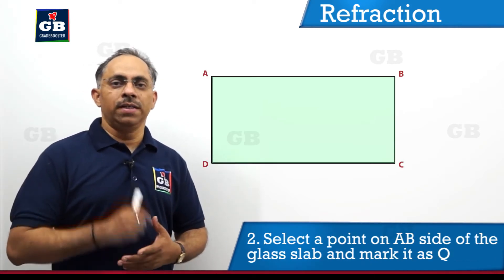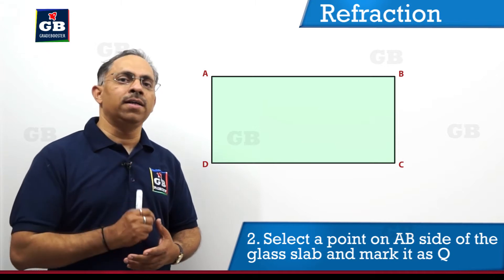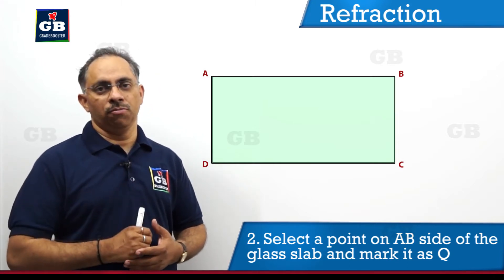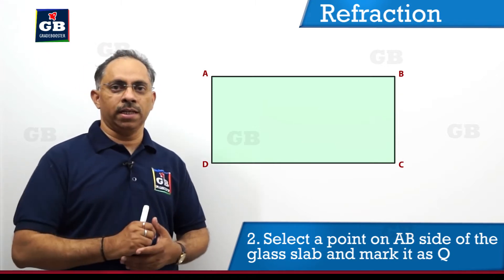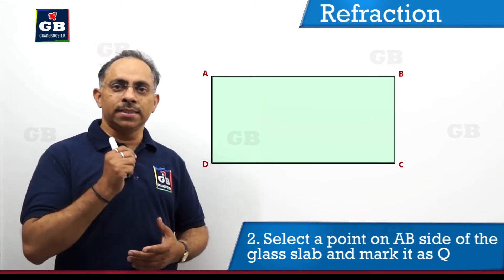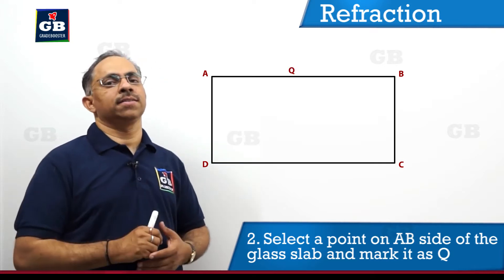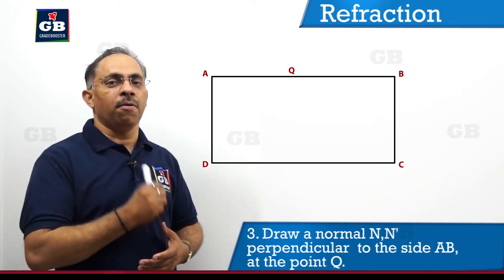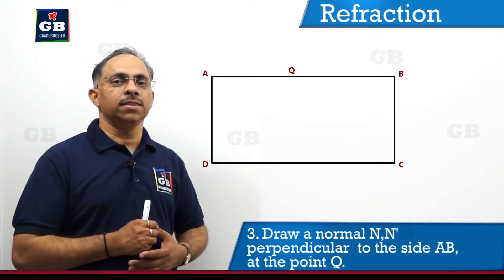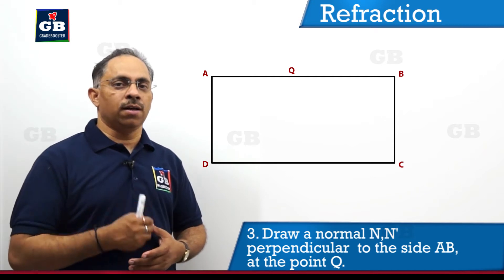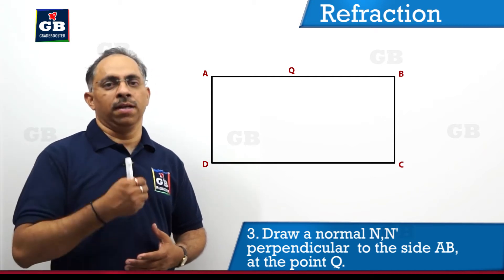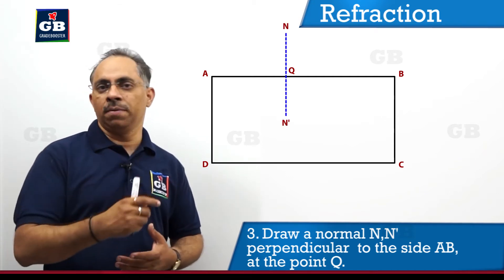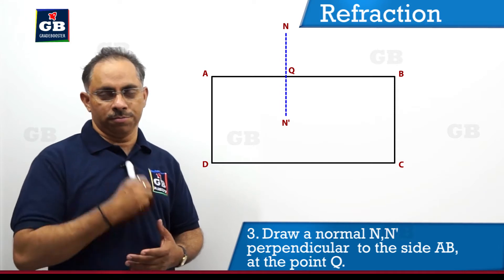Then we will take some point on the AB side of the glass slab and select one particular convenient point, say Q. At that point, we will draw a normal, marking it as NN', so there is a normal at point Q.